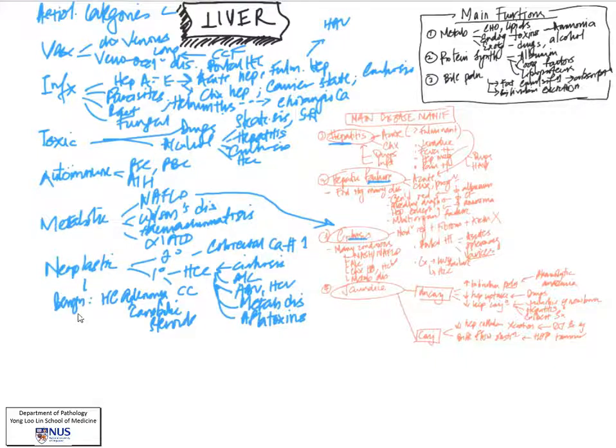We also mustn't leave out the benign neoplasms. The benign primary hepatocellular neoplasm is known as hepatocellular adenoma. This has been linked with the ingestion of anabolic steroids and sometimes even oral contraceptives.